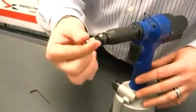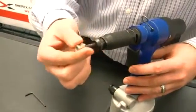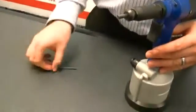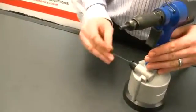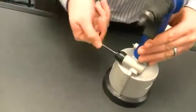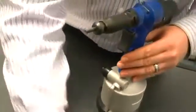We will try to install the rivet nut again. You can see we installed it. So what we will do now is turn it another half turn to ensure we have the proper pulling force.